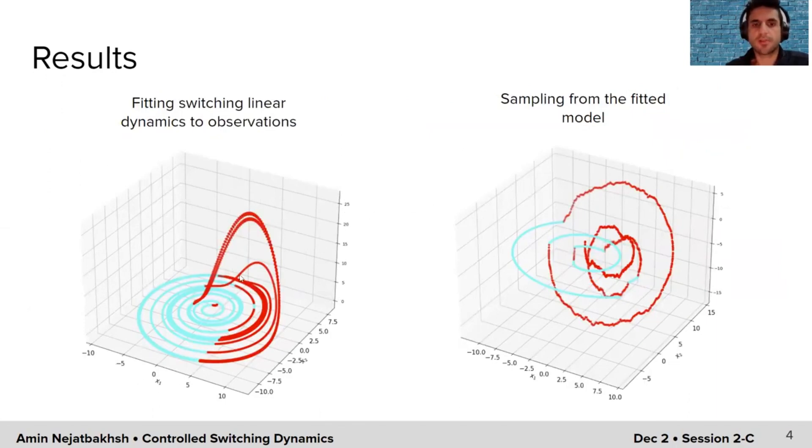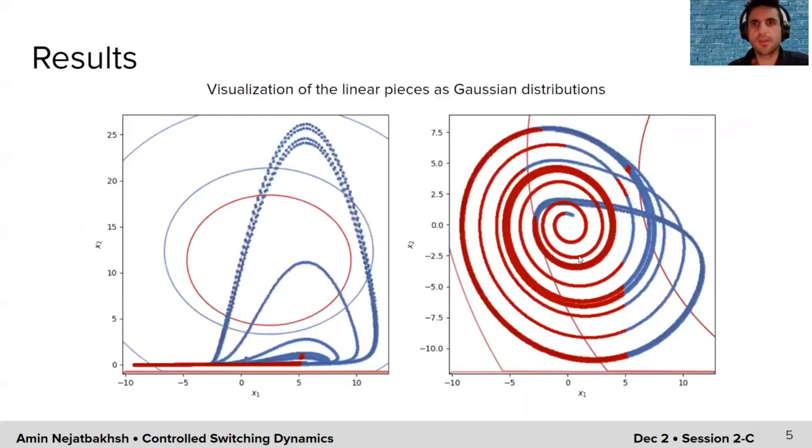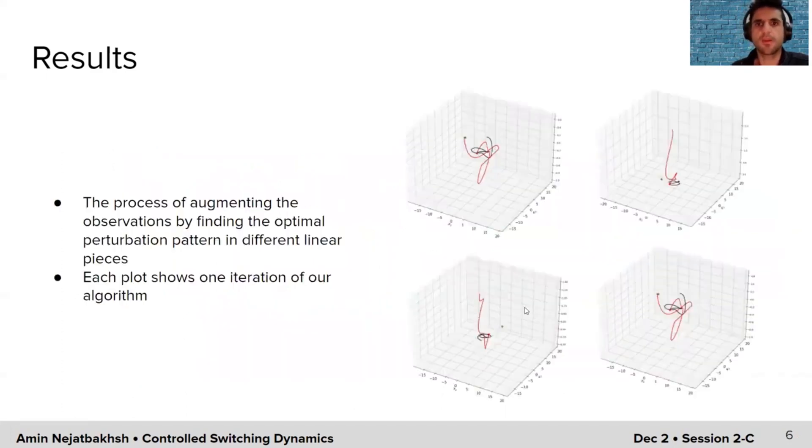Now, starting from this nonlinear observation, we're going to fit switching linear dynamics to it. Here I'm showing the switching fits with two states. We can also sample from this fitted dynamics. We can also visualize the two Gaussian autoregressive models that are fitted to this nonlinear system. Here I'm showing the projection of those two Gaussians in the xz dimensions, and here I'm showing the same thing in the xy projection of the xy dimensions.